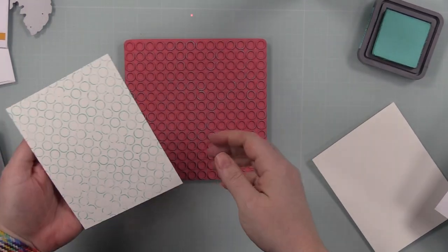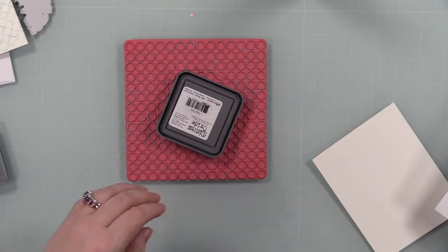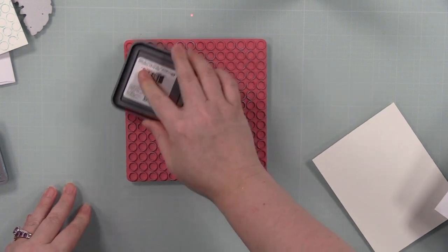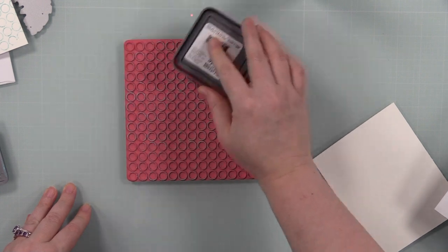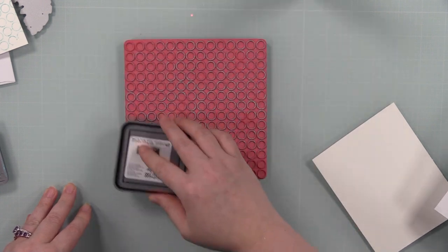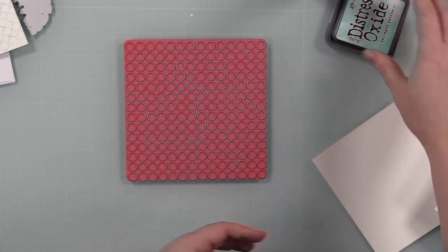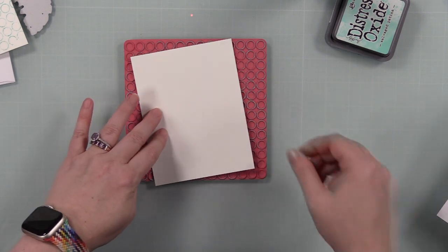I had the stamp face up on my work surface. I inked it up with Salvage Patina distress oxide ink. I didn't ink it up evenly on purpose, just tapping the ink pad. I'm not worried about getting even coverage. I just wanted some pattern on the background.